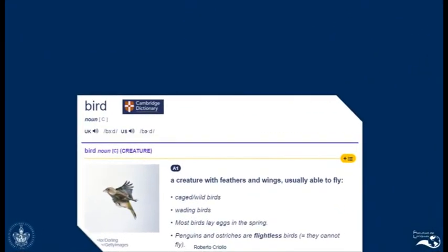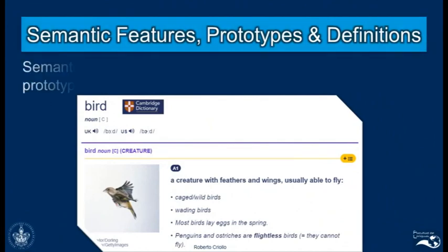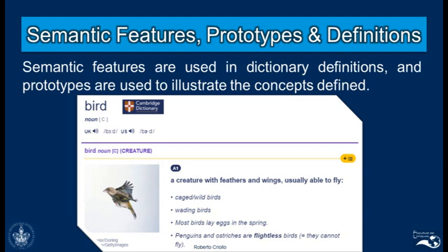To conclude, prototypes and semantic features are very important in dictionary definitions. Prototypes are used to illustrate the concepts being defined, and the semantic features appear in the definition. For example, the definition of bird in the Cambridge dictionary shows that semantic features such as having feathers and wings and being able to fly are central defining elements. The illustration of the concept is that of the prototype — we can see a small bird resembling a sparrow, which is used to illustrate the concept. They don't show us a picture of an ostrich or a penguin; they show us the picture of a sparrow, because this is the prototypical example of the concept bird.